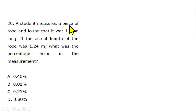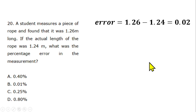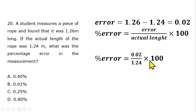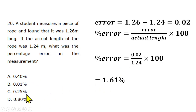Question 20: A student measured a rope as 1.26 m but the actual length was 1.24 m. Error = measured minus actual = 0.02. Percentage error = (0.02/1.24) × 100 = 1.61%. None of the provided options is correct.